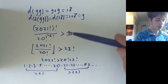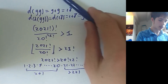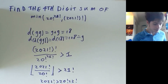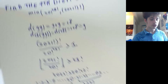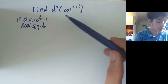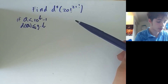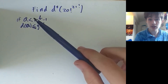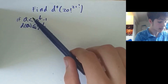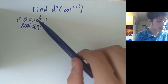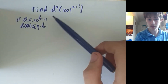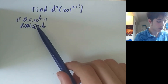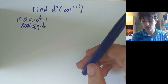From this it follows that 20 factorial to the power of 21 factorial is actually the minimum. So we've reduced our problem to finding the fourth digit sum of 20 factorial to the power of 21 factorial. For this we'll use a key inequality: if a number a is strictly less than 10 to the power of b minus 1, then we can bound all its digits by 9, and the digit sum of a will be strictly less than 9 times b.